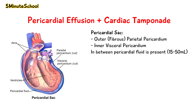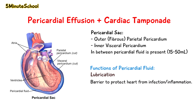This space is also known as the pericardial sac and it contains a small amount of pericardial fluid, around 15 to 50 milliliters in volume. The purpose of it is to lubricate the area and it acts as a barrier to protect the heart from infection and inflammation.